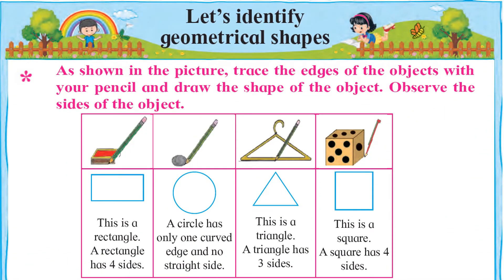Let's Identify Geometrical Shapes — yaani aao pehchanein Hisi Shaklen. Geometrical Shapes ko Urdu mein Hisi Shaklen kehte hain. Yahan par ek instruction di gayi hai: as shown in the picture, trace the edges of the objects with your pencil and draw the shape of the object. Observe the sides of the object. Tasveeron mein dikhaye gaye tareeqon se cheezoon ki kinaaron ke gird pencil pher kar shakal banao aur shakloon ki kinaaron ka mushahida karo.